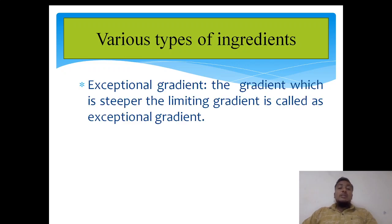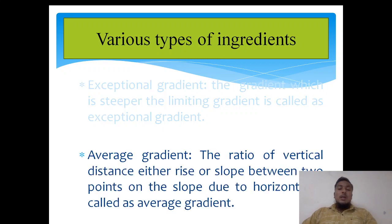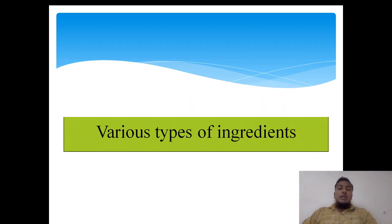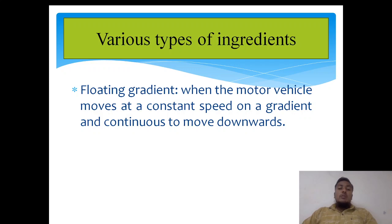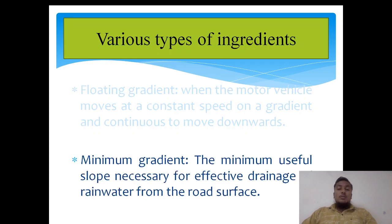The next one is exceptional gradient — the gradient which is steeper than limiting gradient is called exceptional gradient. Then there is average gradient — the ratio of vertical distance, either rise or fall, between two points on the slope to the horizontal distance is called average gradient. Floating gradient is when a motor vehicle moves at a constant speed on a gradient and continues to move downward. And minimum gradient is the minimum useful slope necessary for effective drainage of rainwater from the road surface; it is helpful to drain the water from the road surface.